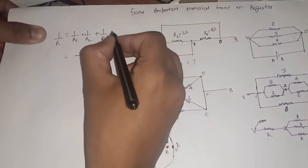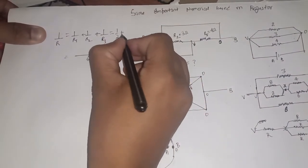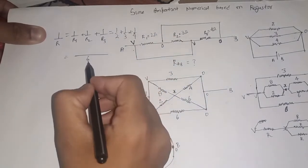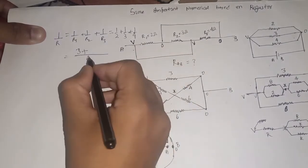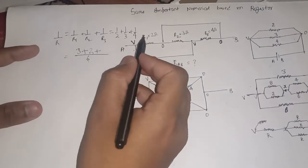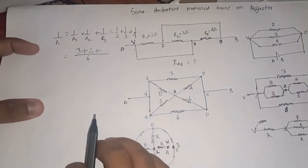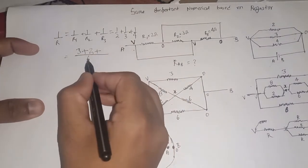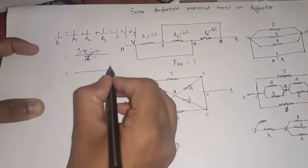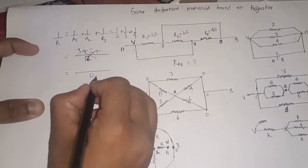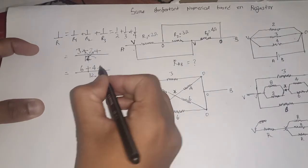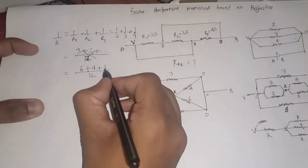I will write it this way: 1 upon 2 plus 1 upon 3 plus 1 upon 4. The LCM of 2 and 3 is 6, and the LCM of 2, 3, and 4 is 12. So we get 6 over 12 plus 4 over 12 plus 3 over 12, giving us 13 over 12.